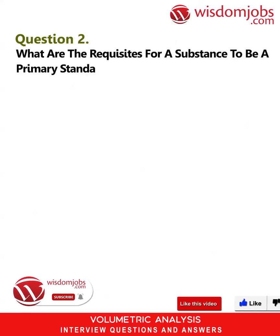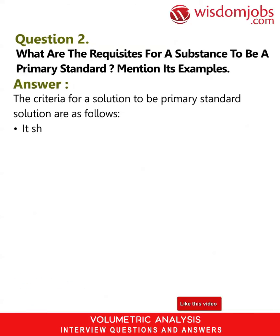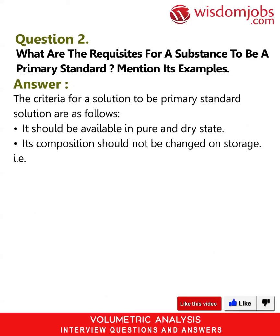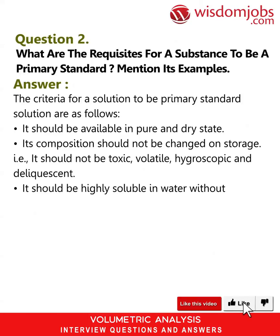Question 2: What are the requisites for a substance to be a primary standard? Mention its examples. Answer: The criteria for a primary standard solution are as follows — it should be available in pure and dry state; its composition should not change on storage, i.e., it should not be toxic, volatile, hygroscopic, or deliquescent.